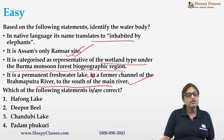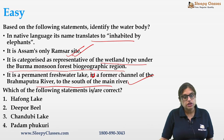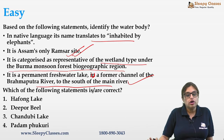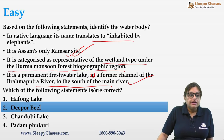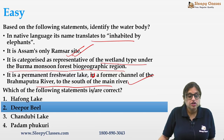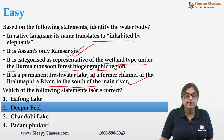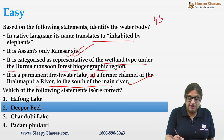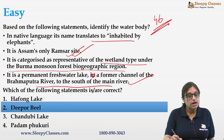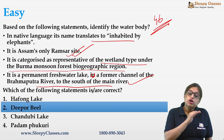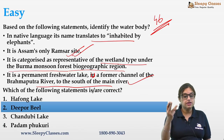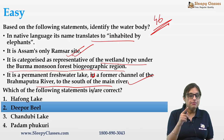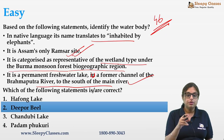The correct answer is Dipor Beel, which is Assam's only Ramsar site. India now has 46 Ramsar sites. In the Northeast, only Assam has one — Dipor Beel. We also have Loktak Lake in Manipur.